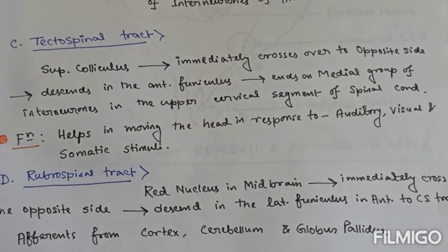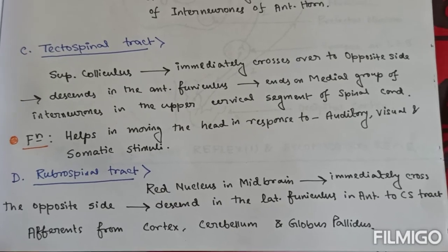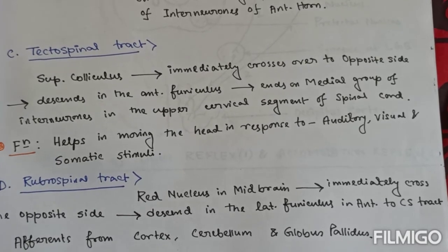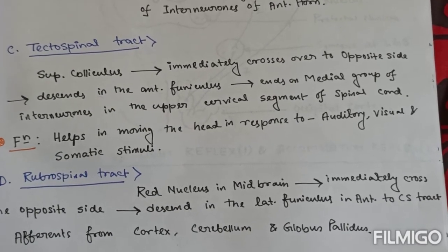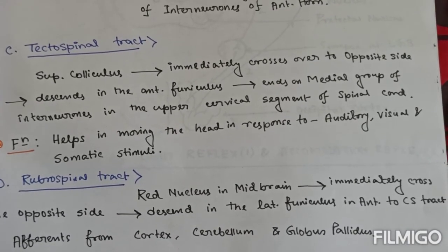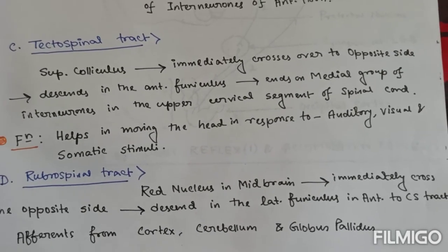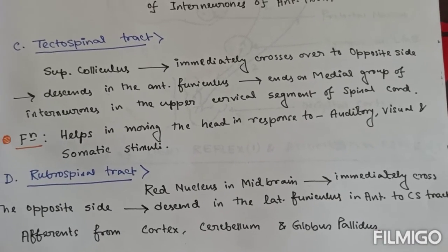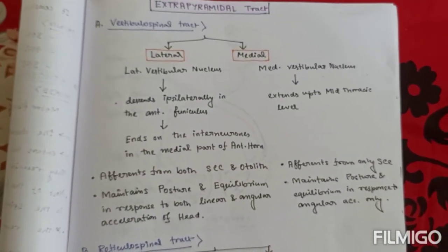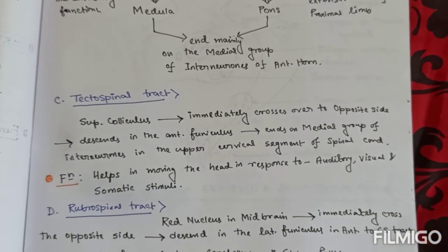The rubrospinal tract originates from the red nucleus in the midbrain, immediately crosses to the opposite side, and descends in the lateral funiculus anterior to the corticospinal tract. It receives afferents from the cortex, cerebellum, and globus pallidus. The function of the rubrospinal tract in humans is not clear. This covers all the extrapyramidal tracts: vestibulospinal, reticulospinal, tectospinal, and rubrospinal.